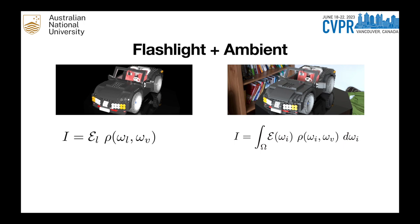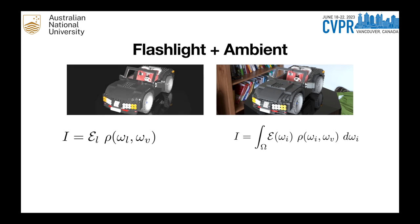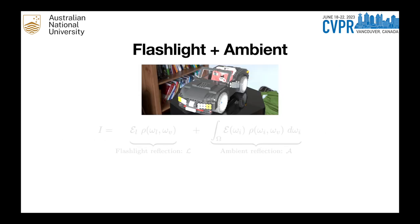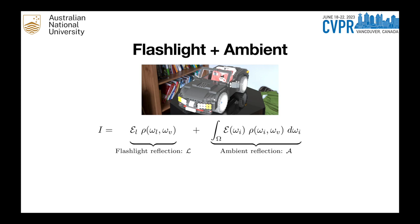We combine darkroom and ambient methods to get the best of both worlds. This is based on the physical law of superposition, which states that when the scene is illuminated by both the flashlight and ambient lights, the total reflected light is the summation of flashlight reflection and ambient light reflection. Since the ambient term is hard to solve, we approximate the integral with a neural net instead.